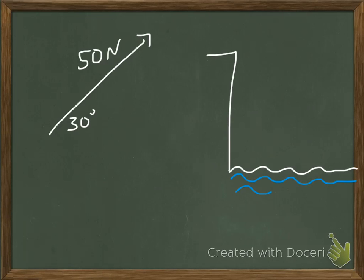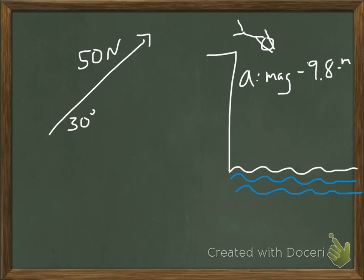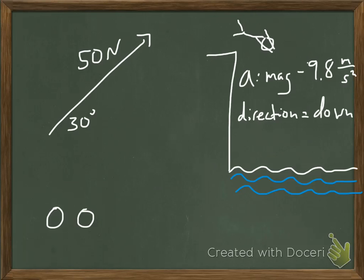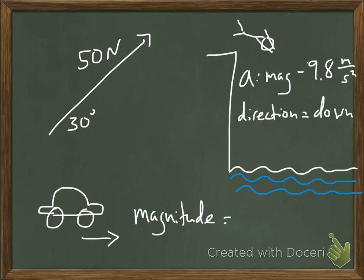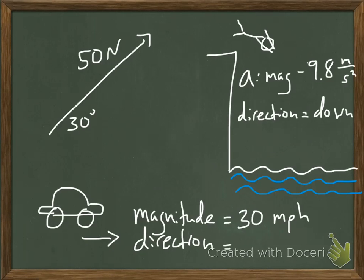If you're jumping off of a cliff into the water and we're talking about the acceleration, it has a magnitude of negative 9.8, and the direction of the acceleration is down, or south. Or if you're driving in a car and you're going to the right, the magnitude of your speed could be something like 30 miles per hour.